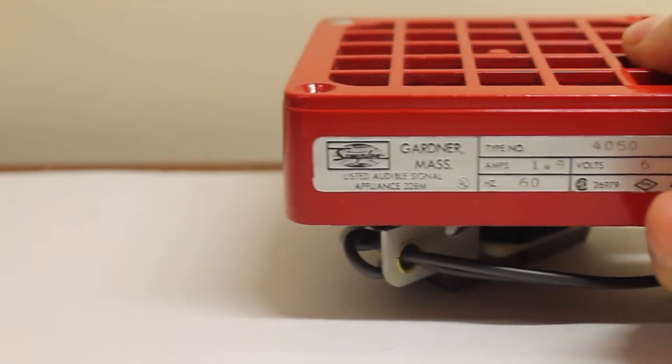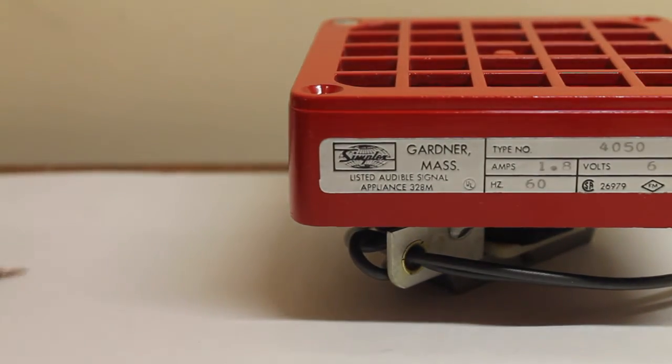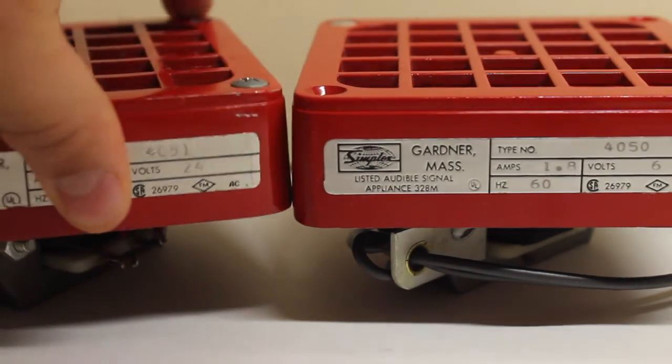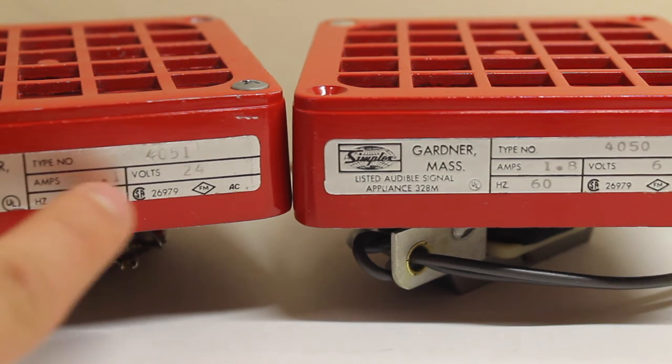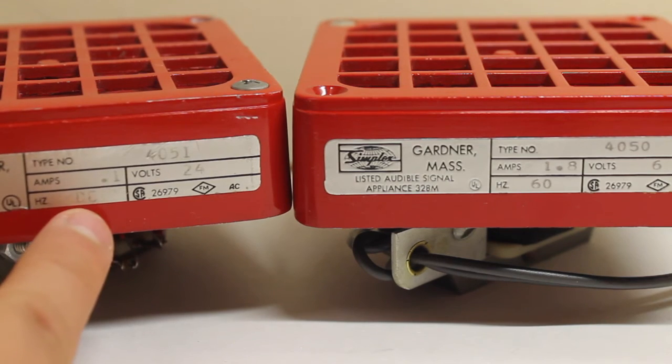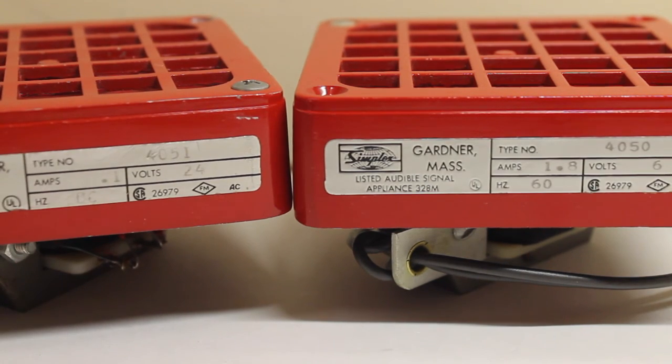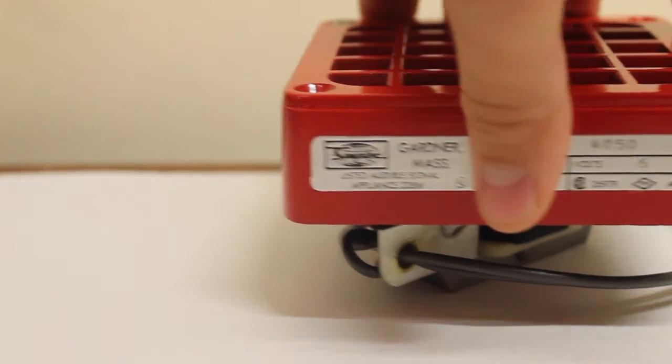I'll just compare that with the label of this 4051. There you go, 4051, 0.1 amps, 24 volts, and notice how it says DC here. So that's one way to tell.